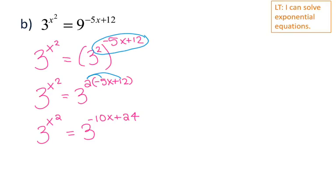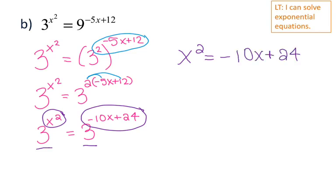So don't forget to distribute completely. And once again, now that my bases are the same, I can just focus on my exponents. And I'm going to set them equal to each other because of the one-to-one property. So I have x squared equals negative 10x plus 24. Now this one is a quadratic equation instead of a linear equation. So for quadratic equations, you have a couple options. You can solve by factoring or you can solve using the quadratic formula. I am a big fan of factoring because it is much easier.